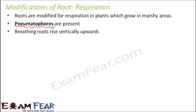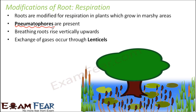These breathing roots rise vertically upwards. Remember that it is not necessary that all roots grow deep into the soil — there are roots which actually grow upwards instead of downwards. Here you can see a big plant growing in a marshy area with muddy water and less oxygen, where the pneumatophores are growing in the upward direction.